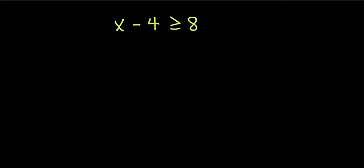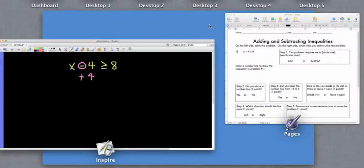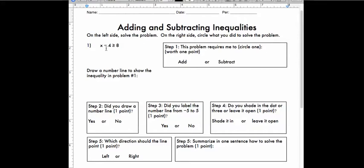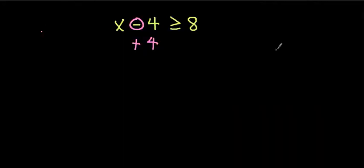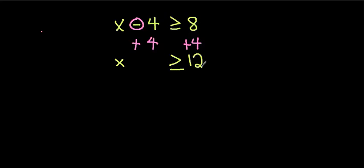Now in this problem, you always have to look at the sign in front of the number. Since we have a negative here, we're going to have to add 4. So you would circle 'add' because this problem requires you to add. If you add 4 to one side, you have to add 4 to the other side. Our answer is going to be x is greater than or equal to 12, because 8 plus 4 is 12. These cancel out.